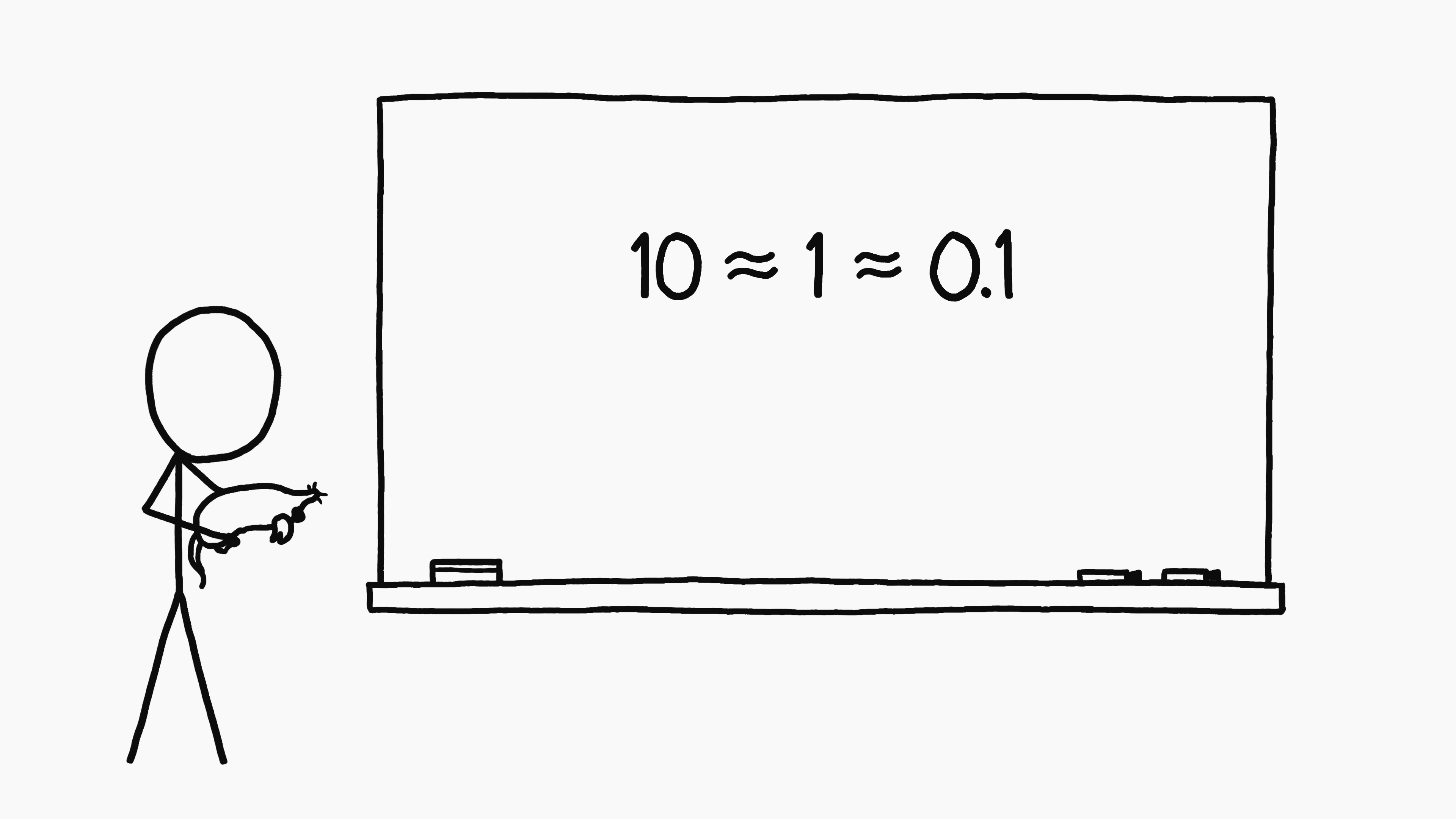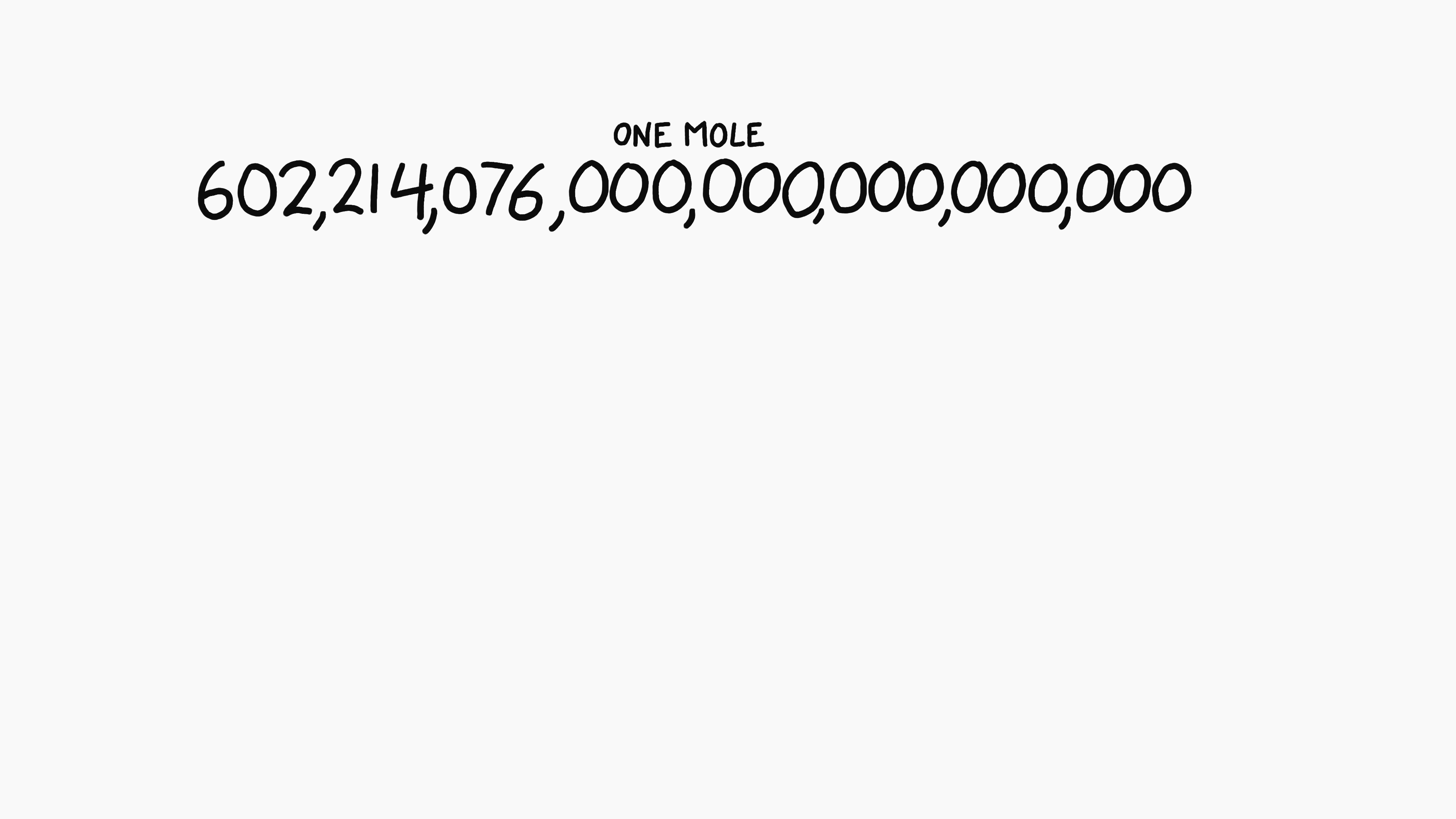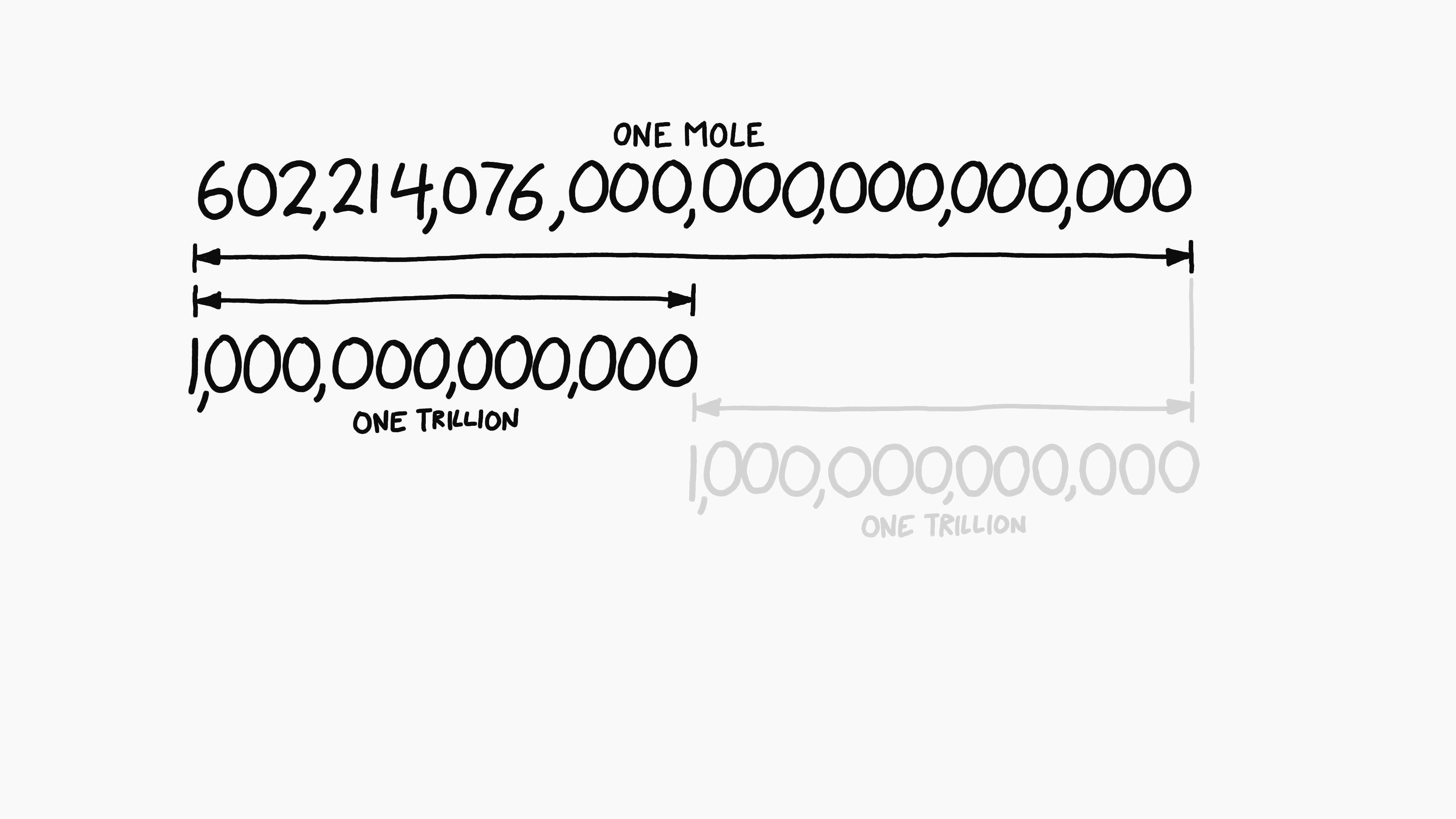Let's say I can pick up a mole, the animal, and throw it. I've never tried this, but I assume I can. Let's assume anything I can throw weighs 1 pound, and 1 pound is basically 1 kilogram. The number 602 sextillion looks like it's about twice as long as the number 1 trillion, which means that a mole of moles is about a trillion trillion kilograms.